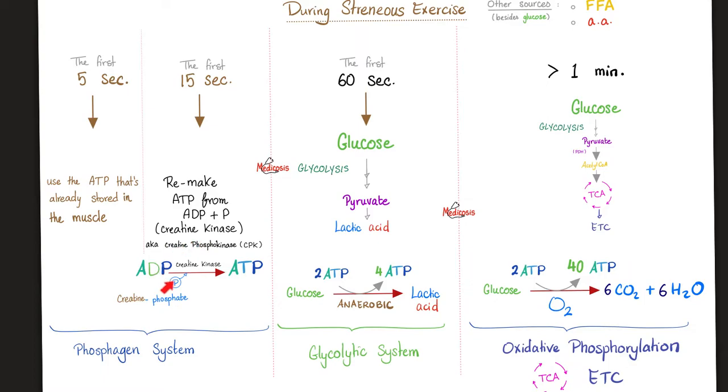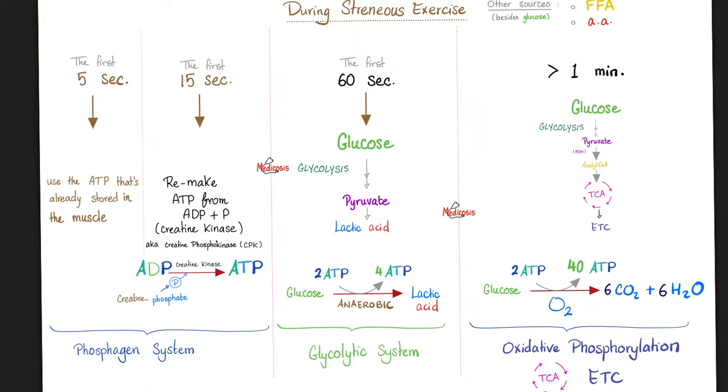Creatinine phosphate of my muscle will get metabolized into creatinine. Creatinine is now in the bloodstream and will end up being excreted by the kidney. Do we have any other organ that excretes creatinine? No, just your kidneys. If I talk about serum creatinine, the creatinine that's still in my blood, it's inversely related to kidney function.